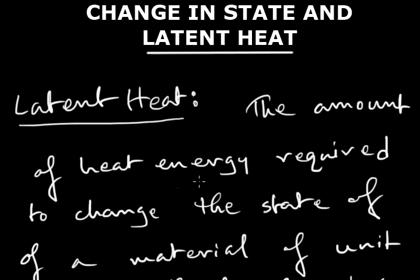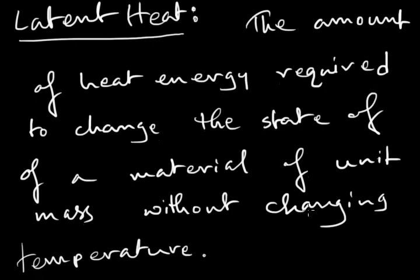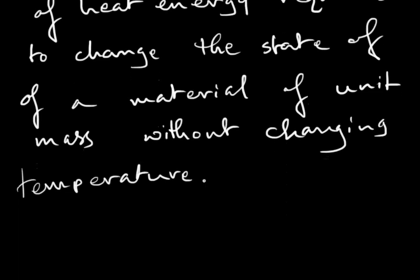The amount of heat energy required to change the state of a material of unit mass without changing its temperature is known as latent heat. Latent heat does not change the temperature of the material — it just changes the state of the material. The unit of latent heat is calorie per gram.